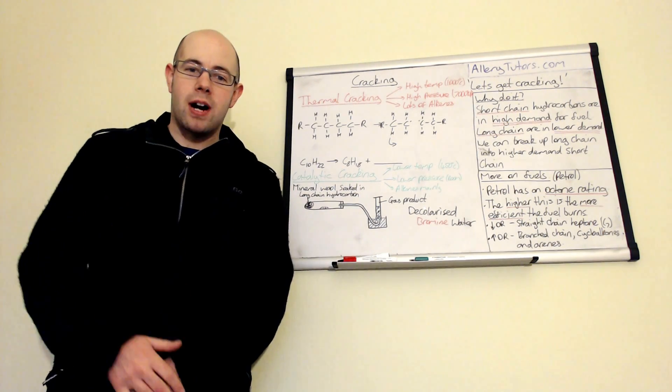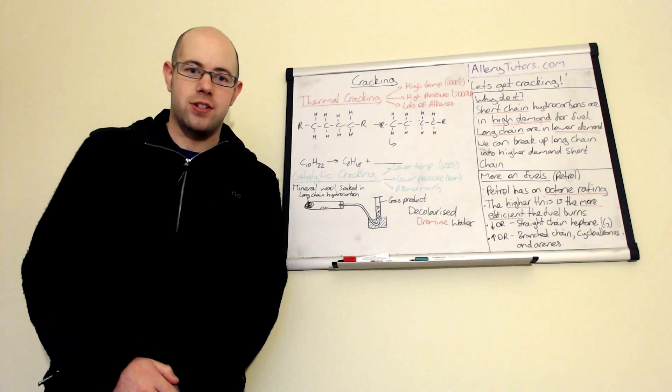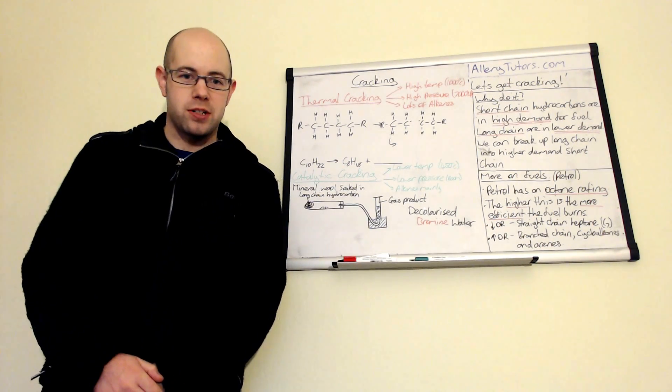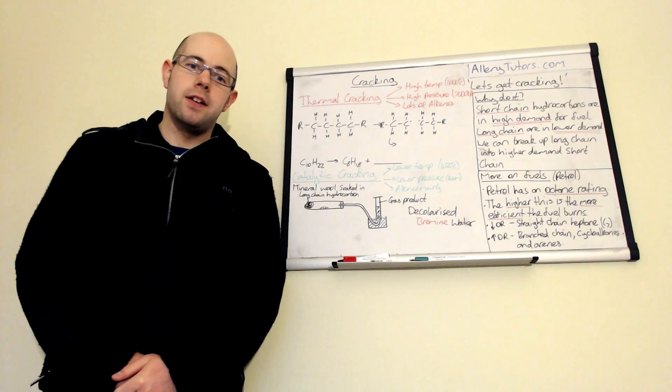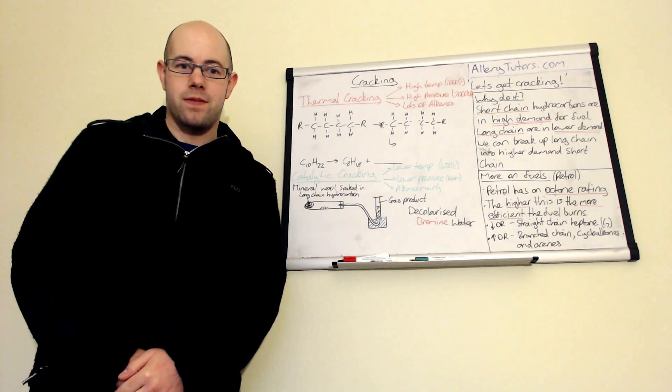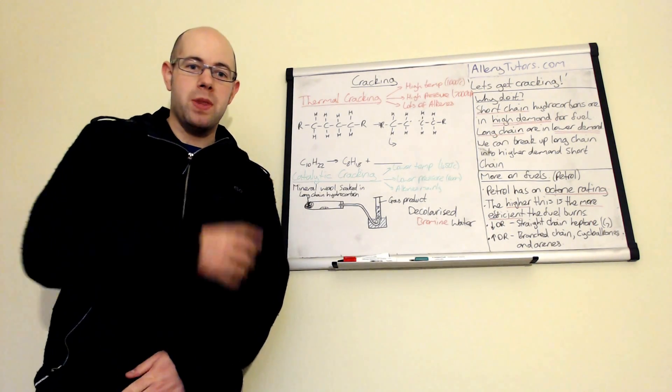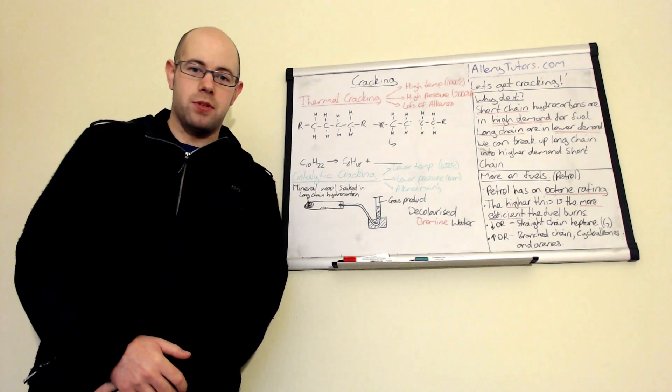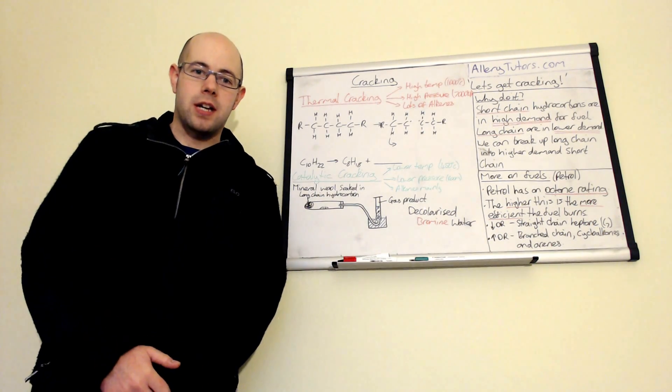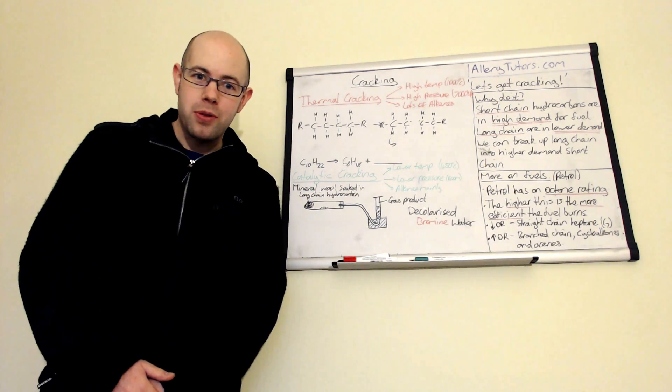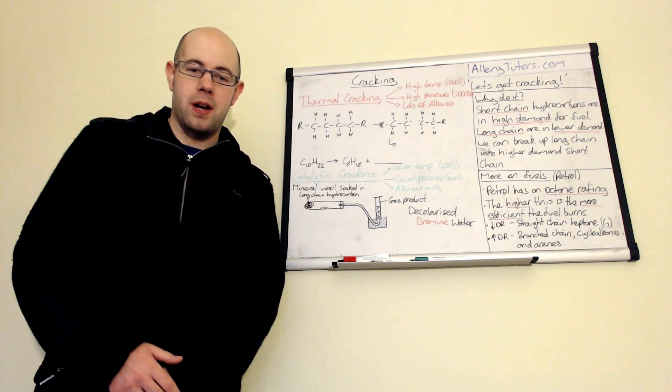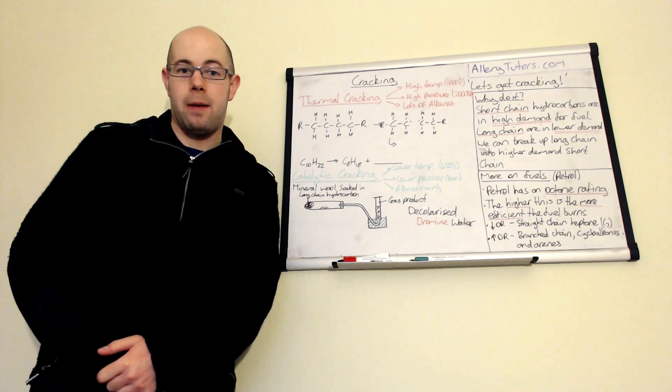Cracking is a process that occurs after fractional distillation. If you don't know what fractional distillation is, there's a video linked below. We're going to look at two types of cracking which you need to know: thermal and catalytic cracking. We'll look at the conditions needed for both and a bit of petrochemical chemistry as well.